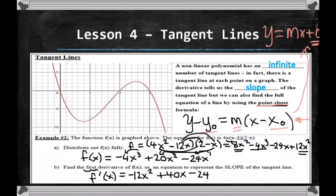The next step is to find the first derivative using the power rule. Bring the 3 down: 3 × (-4) = -12x². Then bring the 2 down: 2 × 20 = 40x. And this term is like x¹, so the 1 comes down giving -24, and x⁰ doesn't need to be written. So f'(x) = -12x² + 40x - 24. The f(x) gives the y-value, and f'(x) gives the slope m for the tangent line formula.